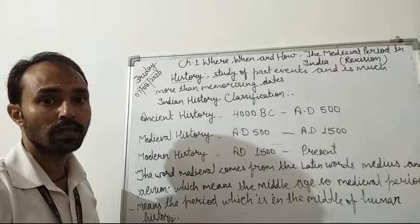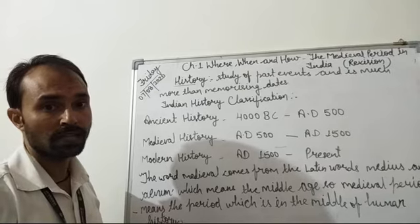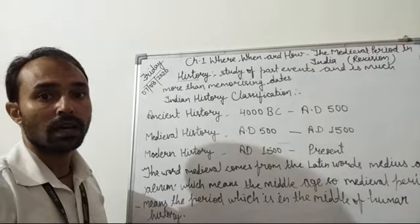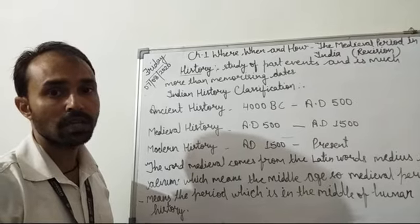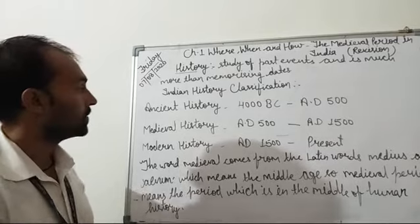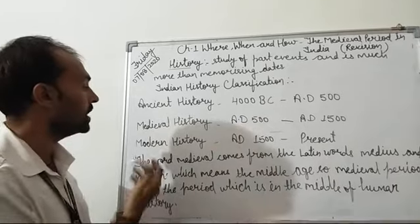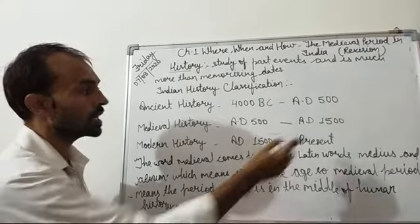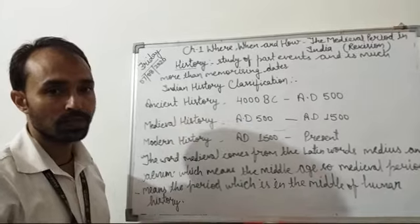Let's first talk about history — what history is. History is the record of past events and it is much more than memorizing dates. Indian history is divided into three periods: ancient history (4000 BC to AD 500), medieval period (AD 500 to AD 1500), and modern history (AD 1500 to present).